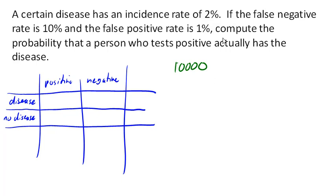So now we have a 2% incidence rate. So out of these 10,000 people, 2% of them or 200 of them will have the disease. Meanwhile, the other 9,800 of them will not have the disease.